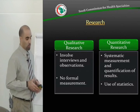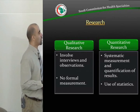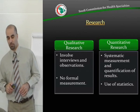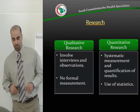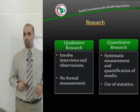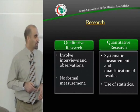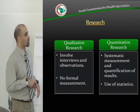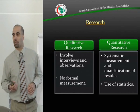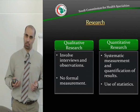On the other hand, quantitative research is where we do systematic measurement and quantification of results, and this is where we use statistics. For example, if I'm measuring blood pressure, I give it a number — I am quantifying it. Even if I'm doing something like quality of life, which is qualitative in nature, there are scales and questionnaires that assign numbers to quality of life.